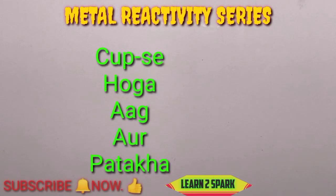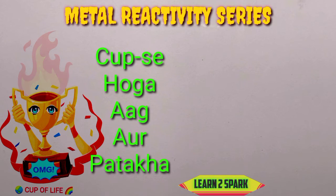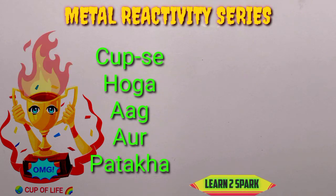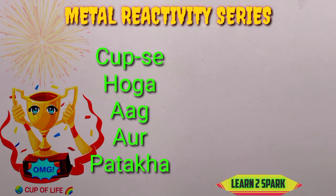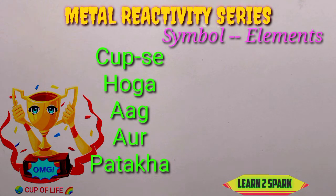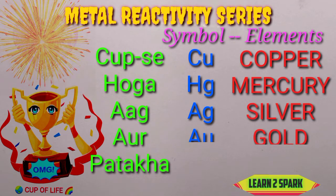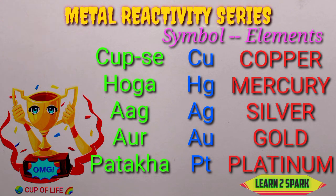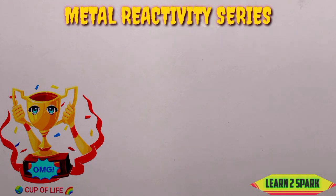Now let's get into our life lessons. 'Life is Precious. Zindegi Na Milegi Dobaara. Zindegi Me Aage Bhandha Hai, Aur Cup Of Life Ko Jeetna Hai.' Once you win the Cup Of Life, you can celebrate it throughout your lifetime with sparkles and fire crackers. That celebration is going to be very exciting — 'Kapse Hoga Aag Aur Pataka?' — Kapse — Cu for Copper, Hoga — Hg for Mercury, Aag — Ag for Silver, Aur — Au for Gold, Pataka — Pt for Platinum. See, it's that easy and simple. Just remember the key sentences.